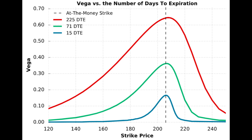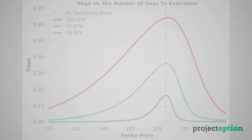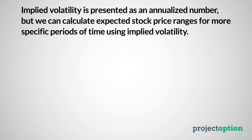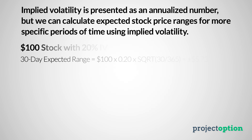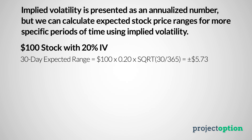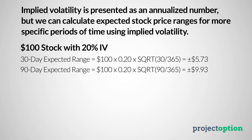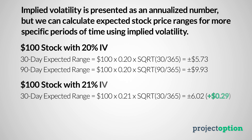To intuitively explain why this is, we need to understand that volatility scales with time. Implied volatility is always presented as an annualized number, but we can use it to calculate implied stock price ranges over specific time periods. For instance, a $100 stock with 20% implied volatility has a 30-day expected range of plus or minus $5.73, meaning the stock price has an implied 68% probability of being within $5.73 of $100 in 30 days. That same stock has a 90-day expected range of plus or minus $9.93, meaning a 68% probability of being within $9.93 of $100 in 90 days.